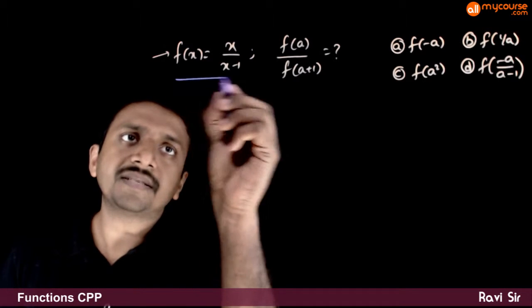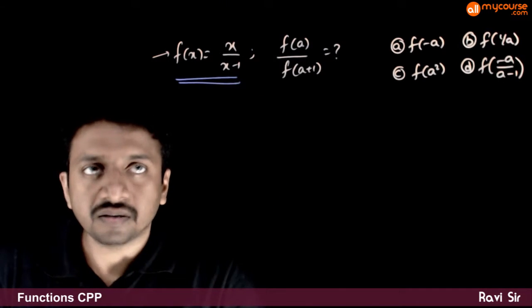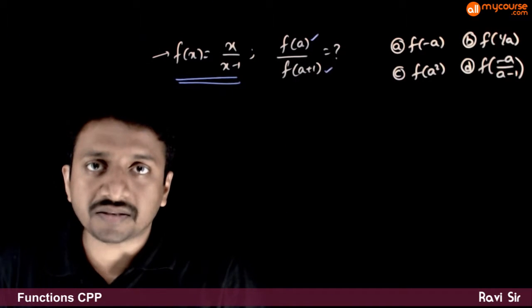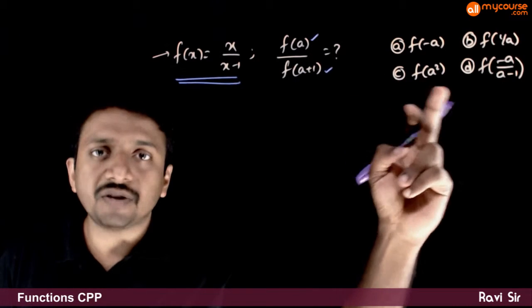In this question, you have given that f(x) is x by x minus 1. You are asked to find what f of a by f of a plus 1 is. You are asked to find which of these options are right.